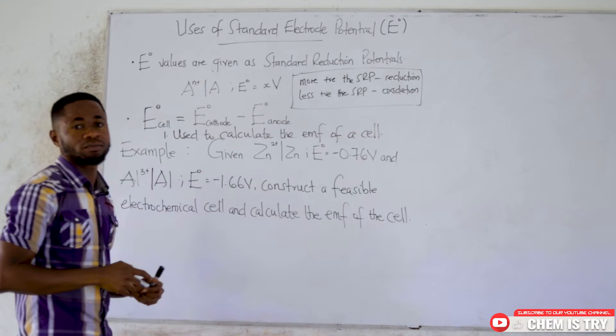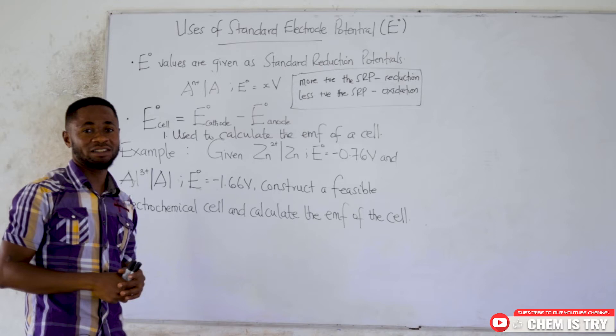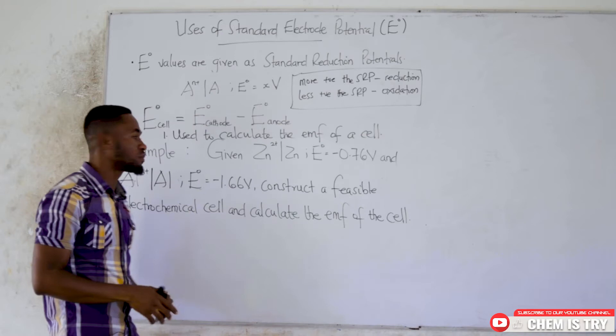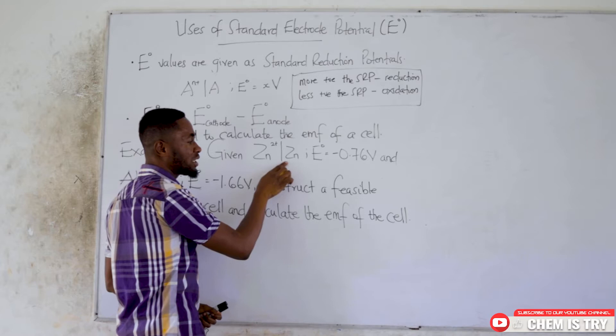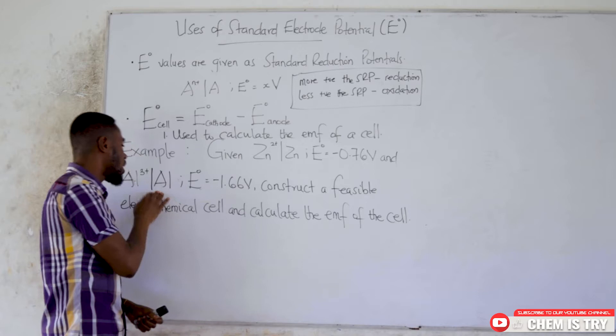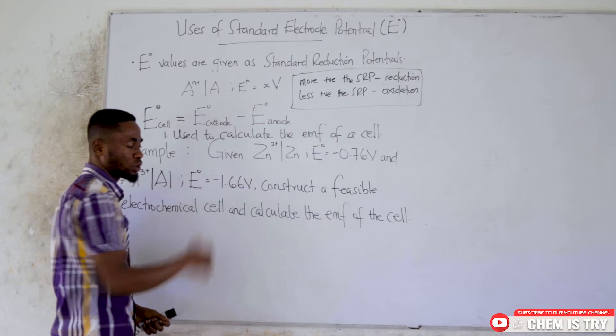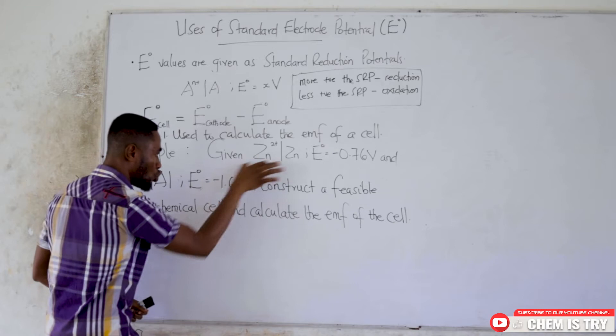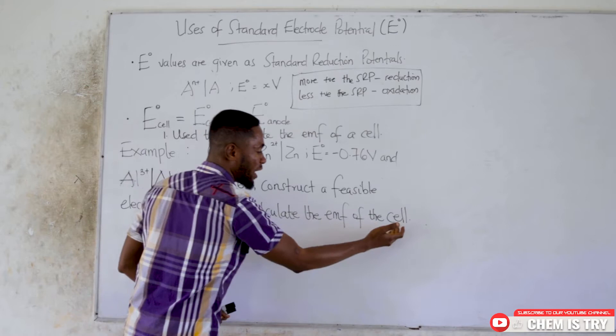Let's look at an example question that will help us understand how these standard reduction potential values are used to calculate the EMF of a whole galvanic cell. In our example, we have been given the standard reduction potential value of the zinc half cell as negative 0.76 volts and the standard reduction potential value of the aluminium half cell as negative 1.66 volts. We are supposed to construct a feasible electrochemical cell with these two electrodes and calculate the EMF of the whole galvanic cell.